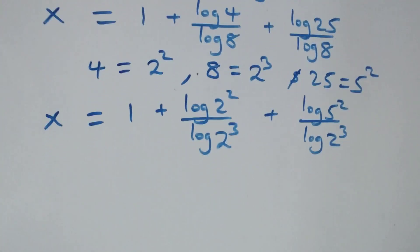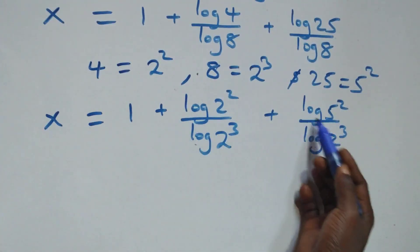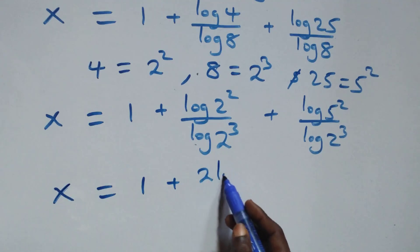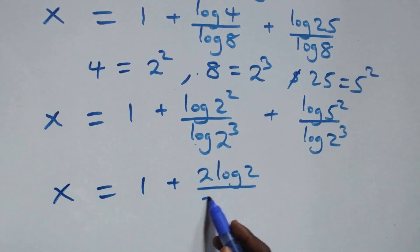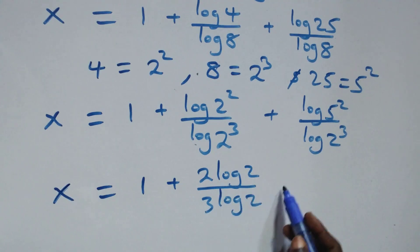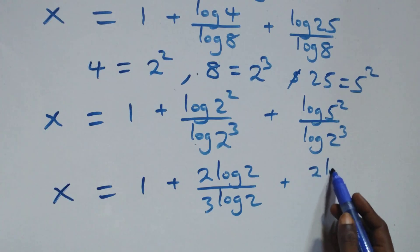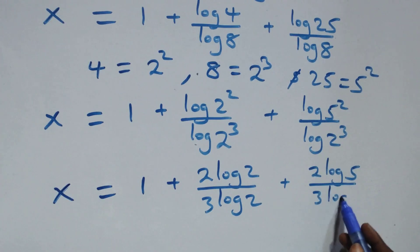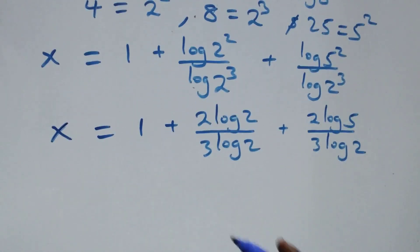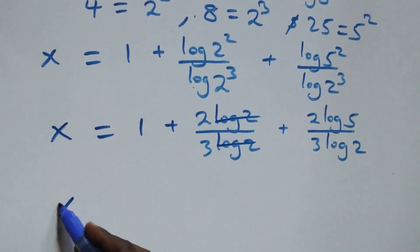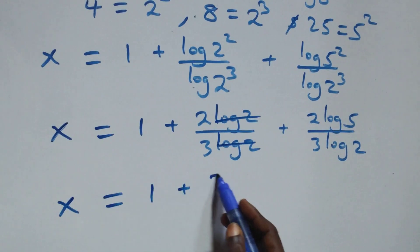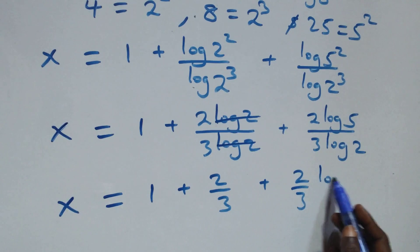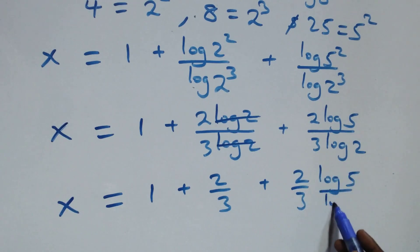We apply the power rule of logarithm: the exponents come out front. So x equals to 1 plus 2 log 2 over 3 log 2 plus 2 log 5 over 3 log 2. From here, log 2 cancels each other in the first fraction, and we have x equals to 1 plus 2 over 3 plus 2 log 5 over 3 log 2.